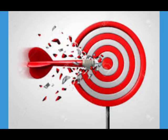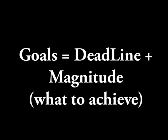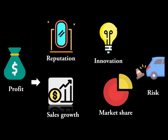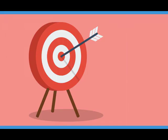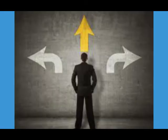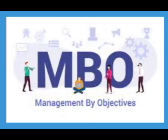Once a company has performed a SWOT analysis, it can proceed to goal formation. Goals are objectives that have a deadline and magnitude — things to be achieved before a deadline. Most business units pursue many objectives including profitability, sales growth, market share improvement, risk containment, innovation, and reputation. The business unit sets these objectives and then manages its decisions based on them — this is also called MBO, or Management by Objective. For an MBO system to work, the company's objectives must meet four criteria.